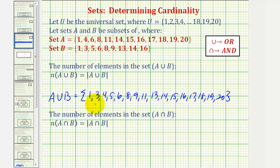So now we want to count the number of elements in this union. So we have one, two, three, four, five, six, seven, eight, nine, ten, eleven, twelve, thirteen, fourteen, fifteen, sixteen. So the number of elements in A union B equals sixteen.